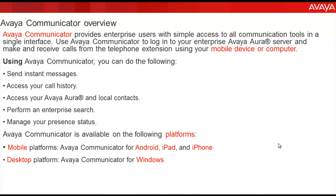Let's take a look at the Avaya Communicator overview first. Avaya Communicator application provides enterprise users with simple access to all the communication tools in a single interface. Use Avaya Communicator to login to your enterprise Avaya Aura server and make and receive calls from the telephone extension using your mobile device or computer.